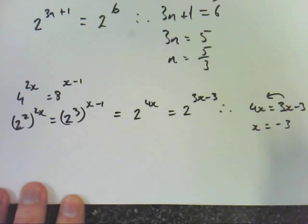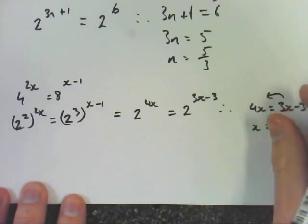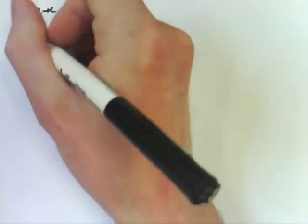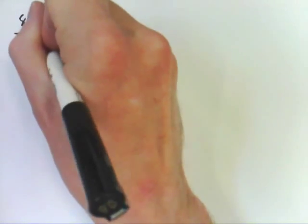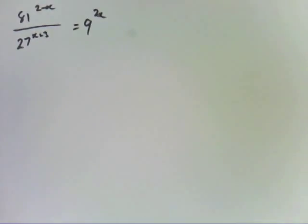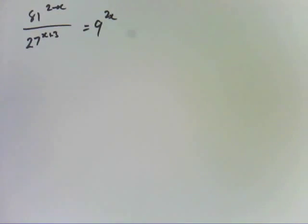What question was that? That was 3a. So, how about 4d? You want to do 4d? So, 4d is 81 to the 2 minus x, divided by 27 to the x plus 3, equals 9 to the 2x. Easy. It is easy once you learn the pattern. It's just a process of following these simple steps.